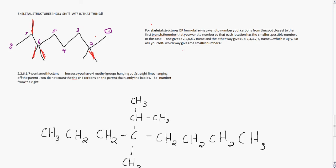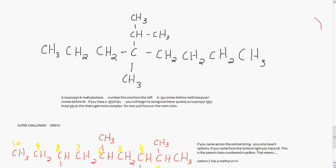So you want the 2, 2, 6, 6, 7 because the second position here is a 2. And the second position here is a 3. So you want to go with the 2 because that's a smaller number for the second position. So naming here, you see you have 1, 2 and then hanging off this 2 are 2 methyl groups. 3, 4, 5, 6, hanging off this 6 are 2 methyl groups. And then the 7 is another methyl group. So 2, 2, 6, 6, 7, pentamethyloctane since there's 5 methyl groups. Because you have the 4 methyl groups hanging out off the parent chain. And you don't count the CH3 carbons on the end of the parent chain if you see it in a formula. So number from the right.